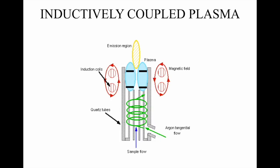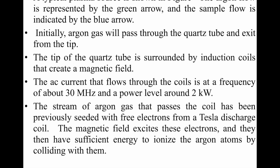Now coming to the inductively coupled plasma. A typical plasma source is shown in the figure. The argon flow is represented by the green arrow and the sample flow is indicated by the blue arrow. Initially, argon gas passes through the quartz tube and exits from the tip. The tip of the quartz tube is surrounded by an induction coil that creates a magnetic field. The AC current flowing through the coils is at a frequency of about 30 megahertz and a power level of around 2 kW. The stream of argon gas passing the coil has been previously seeded with free electrons from a Tesla discharge coil. The magnetic field excites these electrons, giving them sufficient energy to ionize the argon atoms by colliding with them.